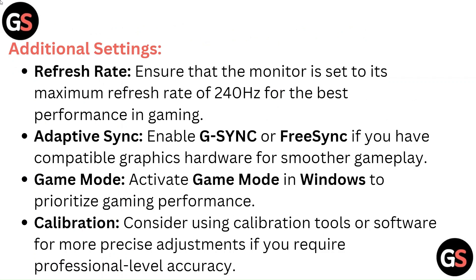For additional settings, ensure that the monitor is set to its maximum refresh rate of 240Hz for the best gaming performance. Enable G-Sync or FreeSync if you have compatible graphics hardware for smoother gameplay. Also activate Game Mode in Windows to prioritize gaming performance.